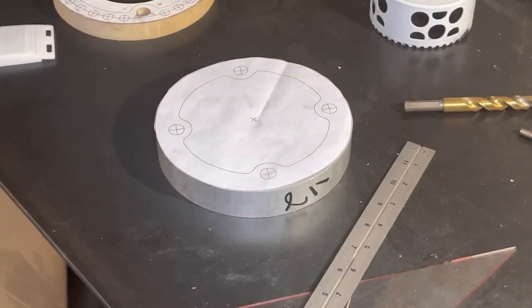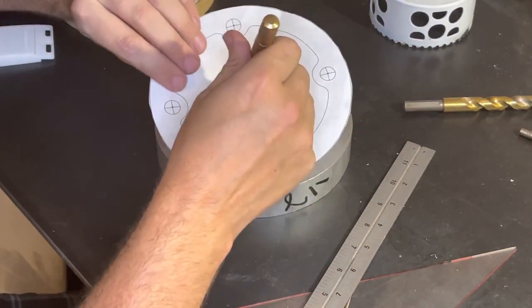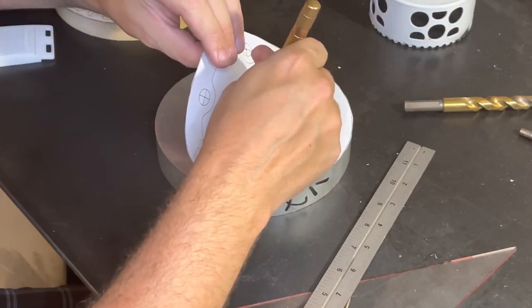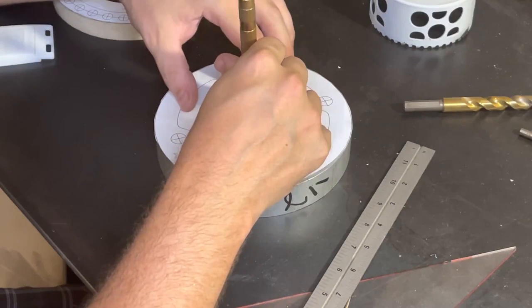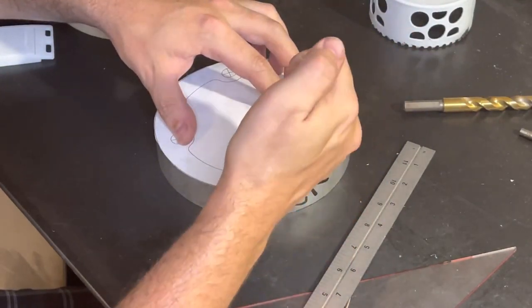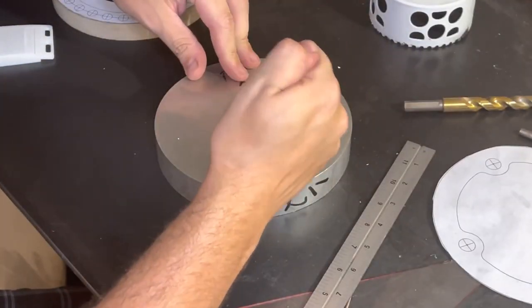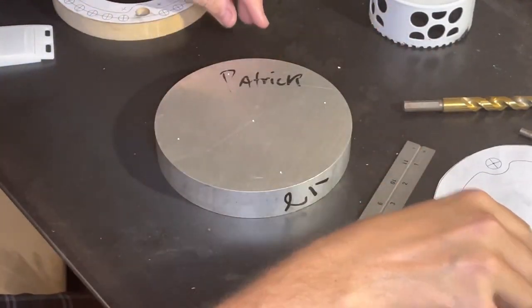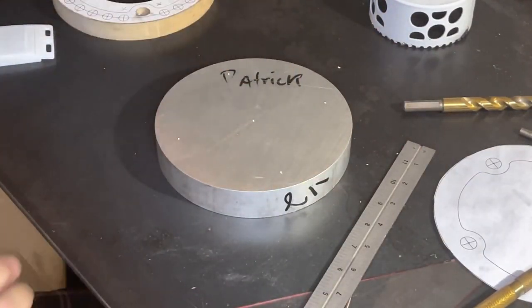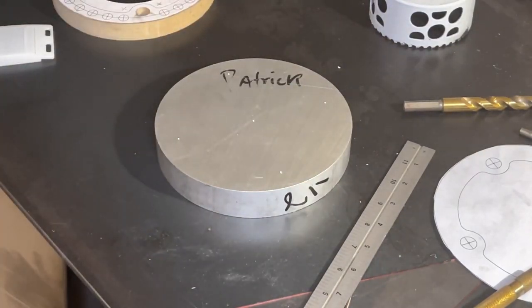Once we have that center point, we're just going to go ahead and use our template. So again, our center point being here, I'm just going to try and locate it roughly with this so I can have this in the correct location. And then from here, all we need to do now is punch our holes. There we go. So now we've got our four bolt holes, our pattern, and we have the center part ready to be drilled, and we'll be good to go.